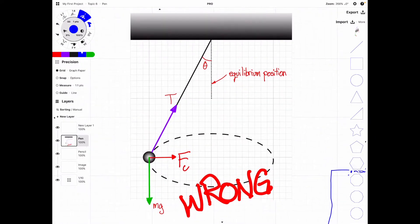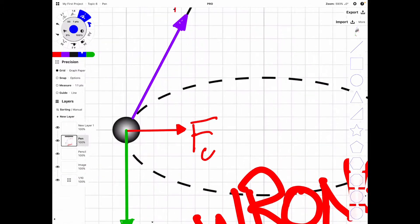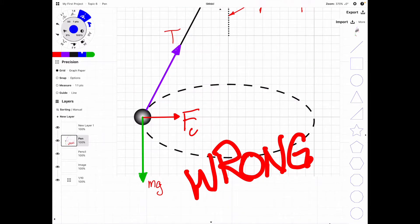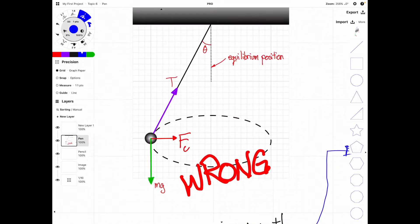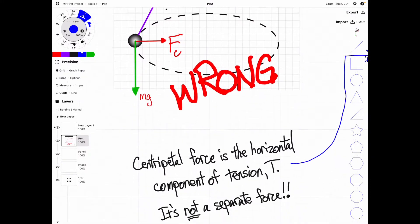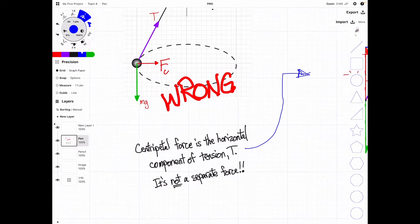This diagram is wrong. We do not add centripetal force to our free body diagram. Centripetal force is not a separate force to either tension or gravity. Centripetal force is the horizontal component of tension, not separate.